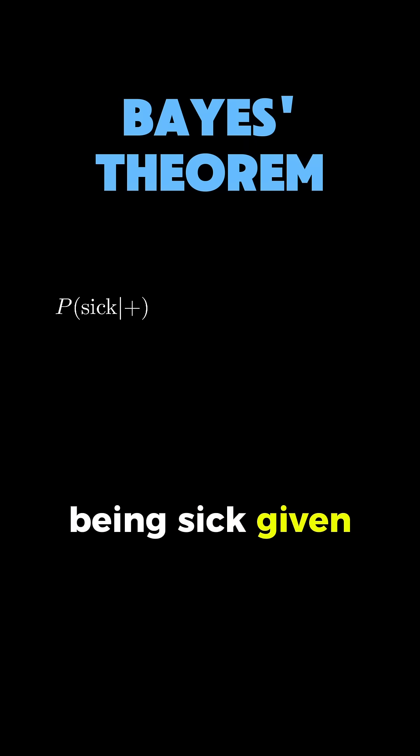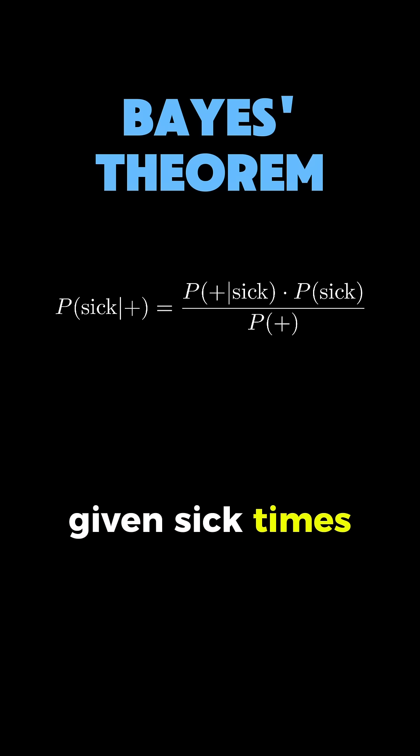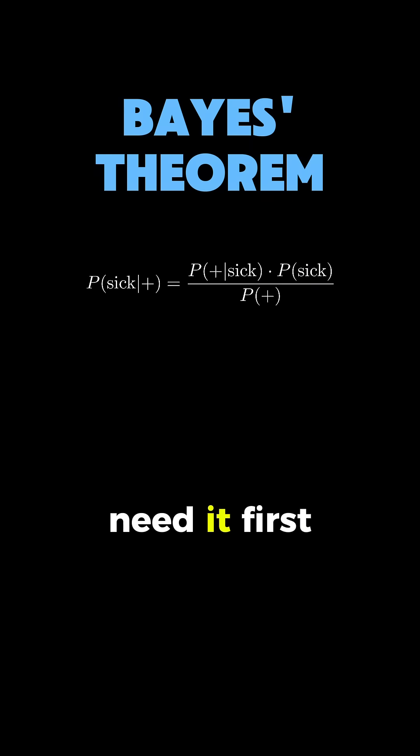The probability of being sick given a positive test, which we write as P(sick|+), equals P(+|sick) times P(sick) all divided by P(+). Let me break this down so it becomes crystal clear what each piece means and why we need it.